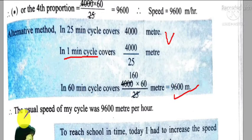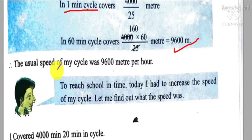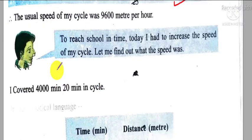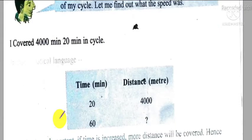So the speed of my cycle was 9600 meters per hour. Distance, time, or speed - there are three types of problems in this chapter, and we can easily find out the required answer by following proportion method or unitary method.